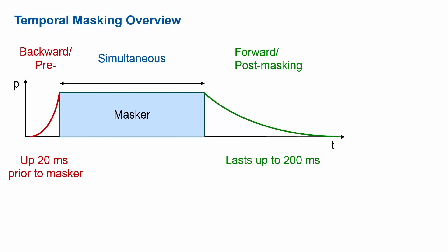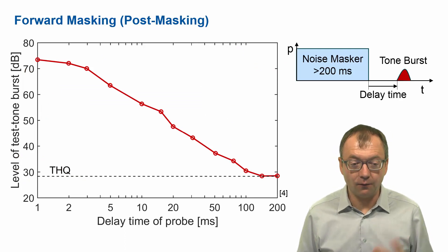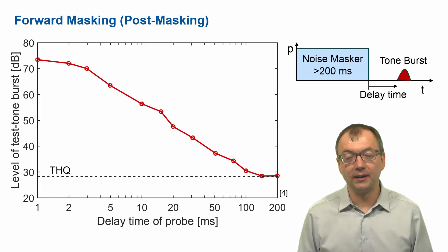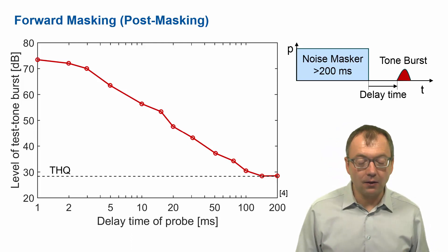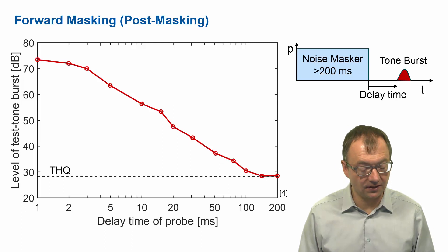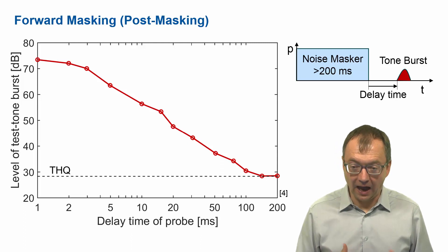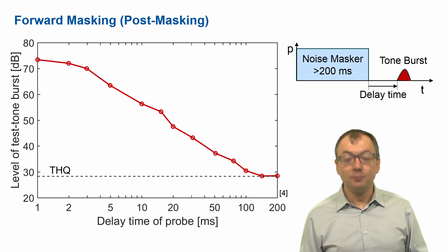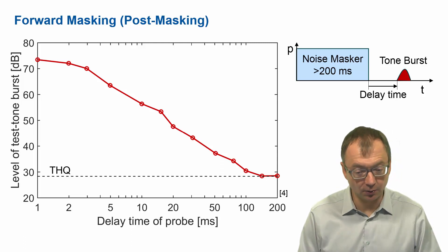These are the data for forward masking. After we turn off the masker — and the masker has to be, as we already heard, longer than 200 milliseconds — what is measured here is the level of a short tone burst that is necessary to just detect it, as a function of the delay time after the masker has been turned off. You also see here the threshold in quiet for that tone burst, and because it's very short, it's higher than the regular threshold in quiet for tones.